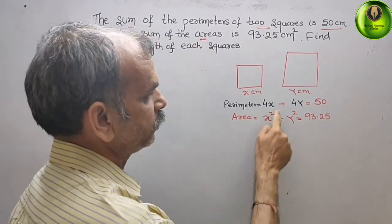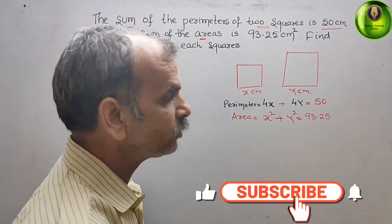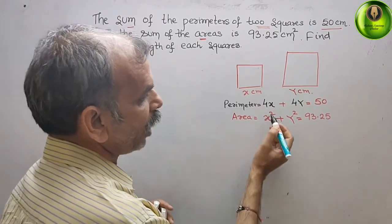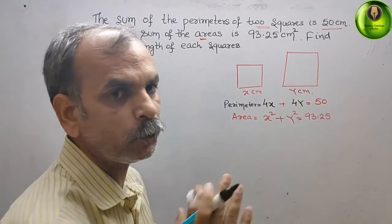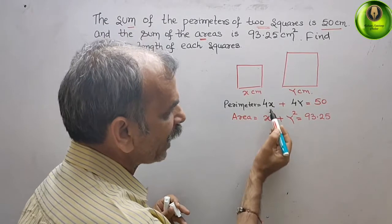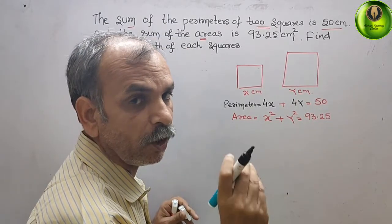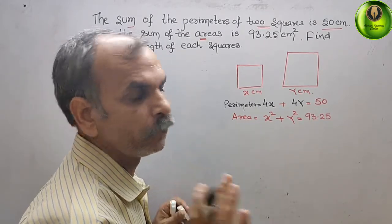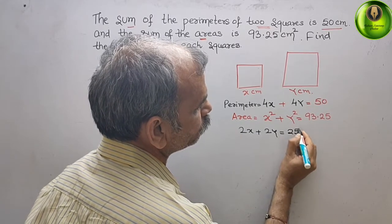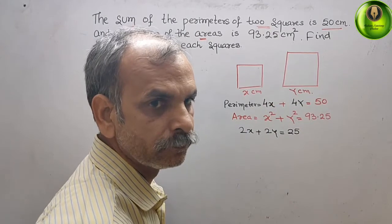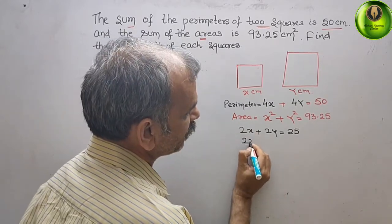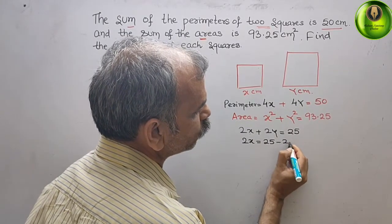You got two equations — this and this. What we have to do is substitute one value from the first equation into the second. We will divide the first equation by 2. If you divide 4x + 4y = 50 by 2, you get 2x + 2y = 25. Now, expressing x: 2x = 25 − 2y, so x = (25 − 2y) / 2.